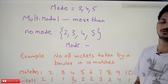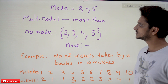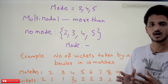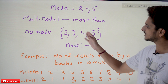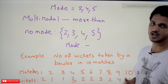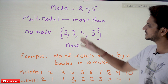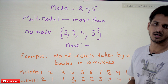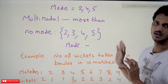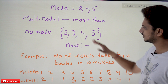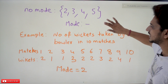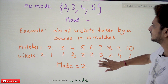We can also have a no-mode situation. If all the values are unique — for example, 2, 3, 4, 5 with no repetition of values — then there is no mode for this data set. The mode value is given as nil.